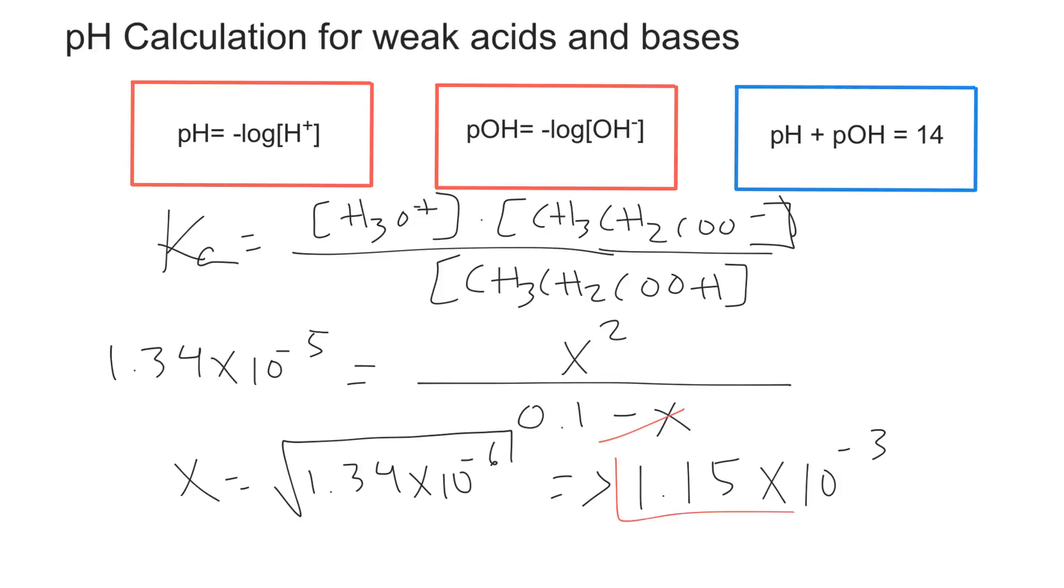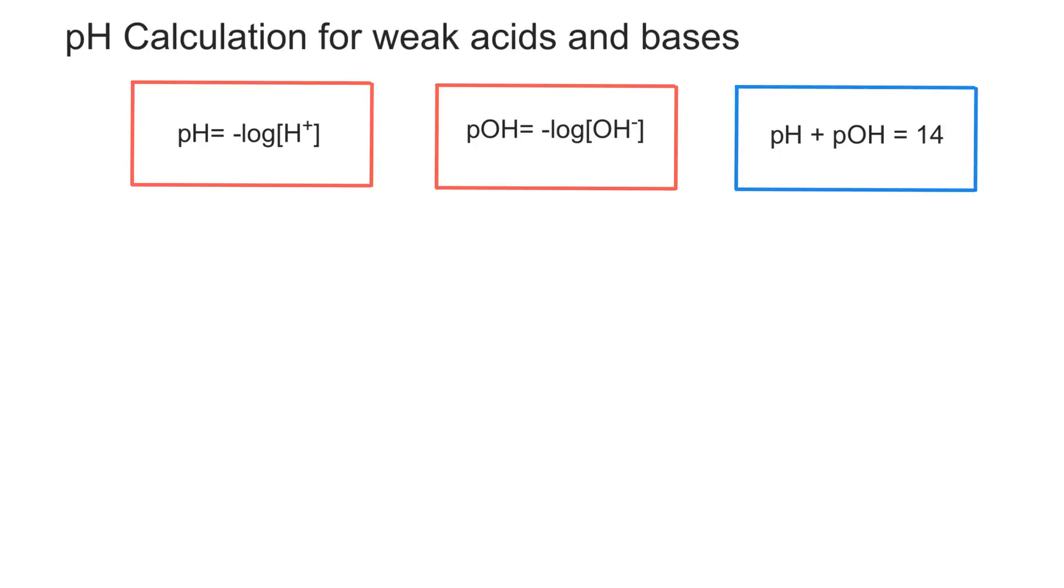And this right here is the concentration of hydrogen ions that we need to plug in into the pH equation. The pH would now be equal to the negative log of our hydrogen concentration, which was 1.15 times 10 to the negative 3. And we get a pH of 2.93. And that's the pH of the weak acid we had.